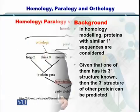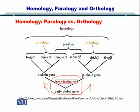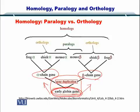So let's start with homology, paralogy, and orthology. As you can see here, if a specific gene during the process of evolution gets duplicated and diversifies into different proteins over time — such as the example here of the alpha chain gene and beta chain gene — these are essentially coming from the early globin gene. So the early globin gene is the ancestor for both of these diversified genes or proteins.